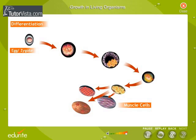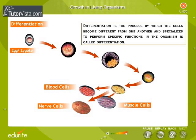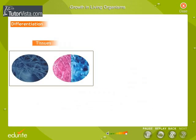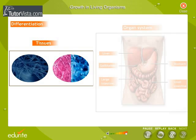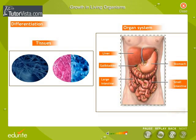Some develop into muscle cells, some into nerve cells, some form the blood cells, the bone cells and so on. This process by which the cells become different from one another and specialize to form specific functions in the organism is called differentiation. These differentiated cells develop into tissues, organs and organ systems.